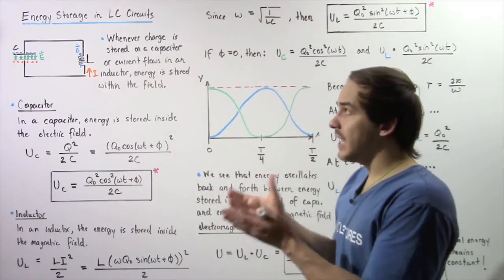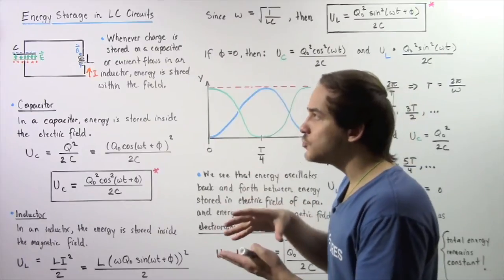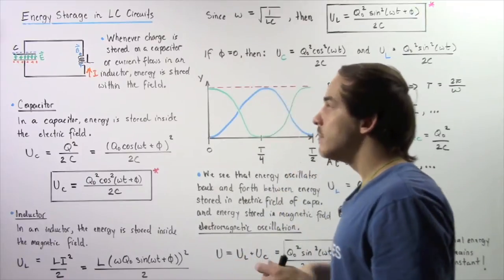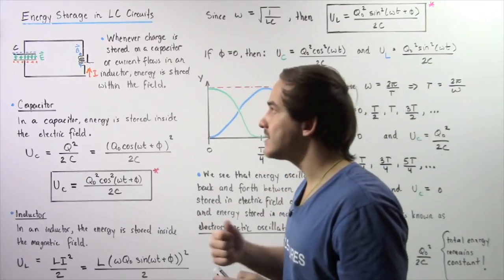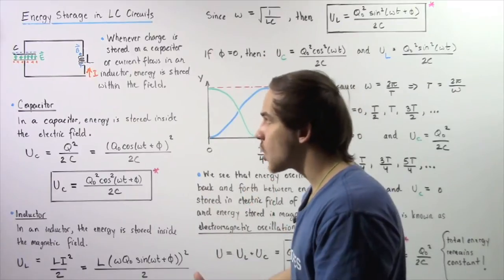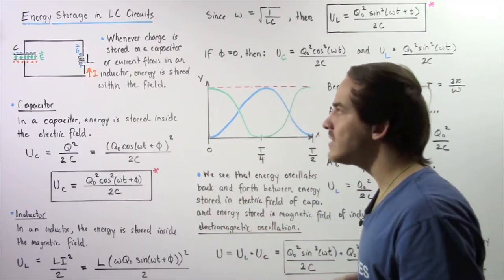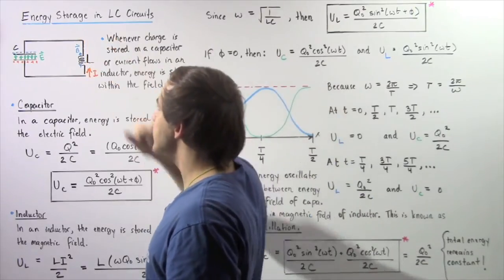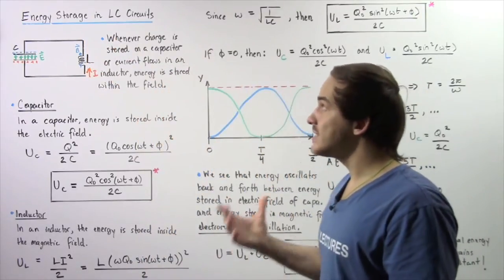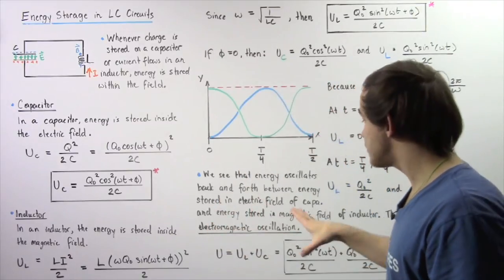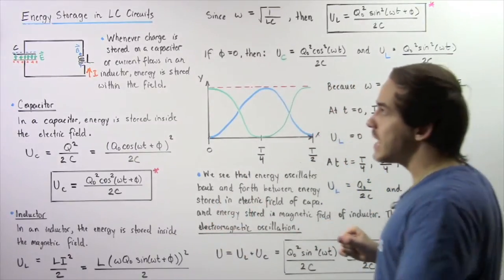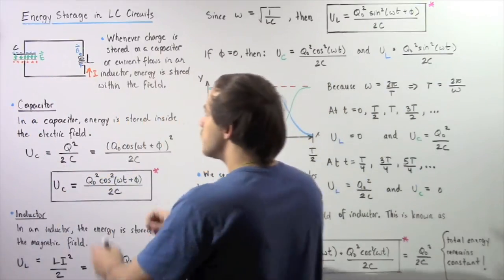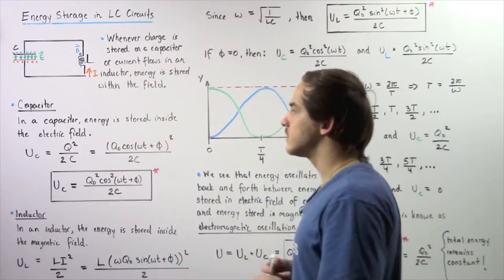Initially, at time zero, all that energy is stored inside the plates of our capacitor. But as time progresses, the charge is discharged from the plates of the capacitor and energy begins to store inside the magnetic field of our inductor. So essentially, inside an LC circuit, the energy oscillates from being stored inside the capacitor to being stored inside our inductor.